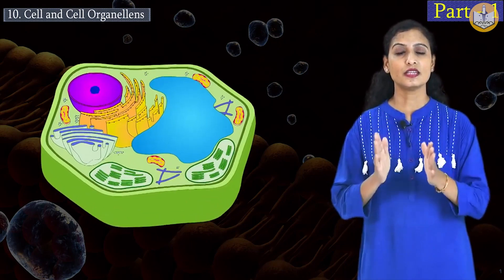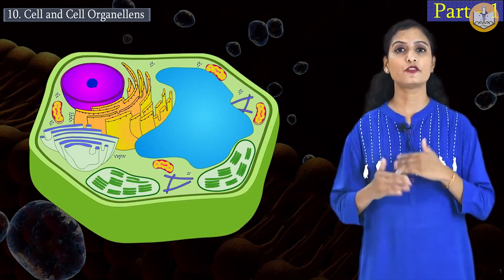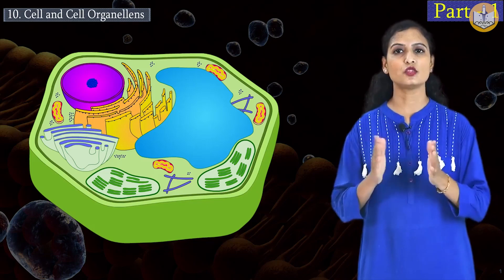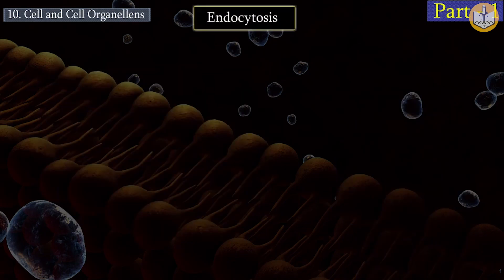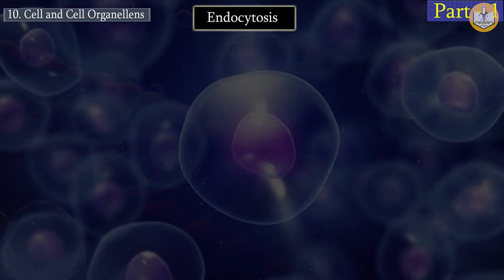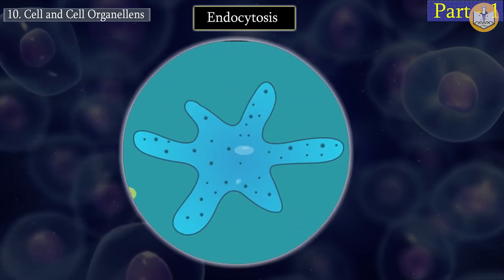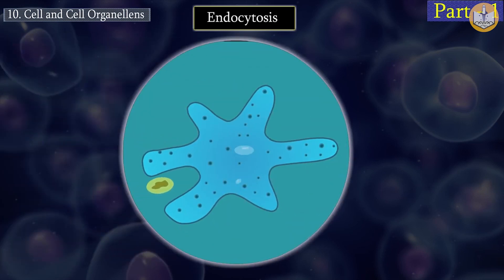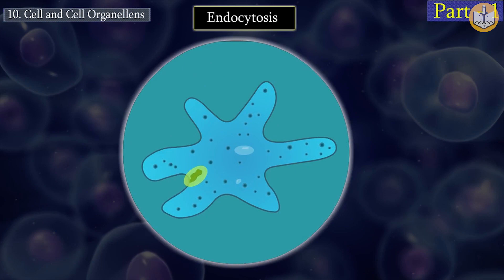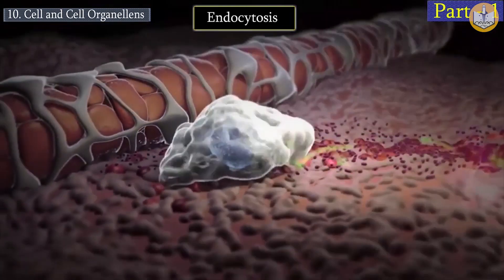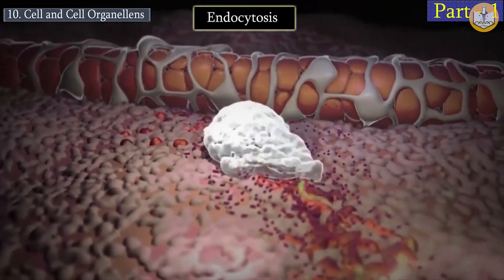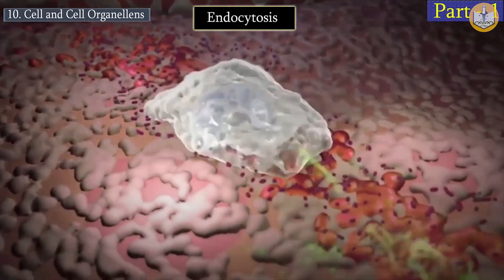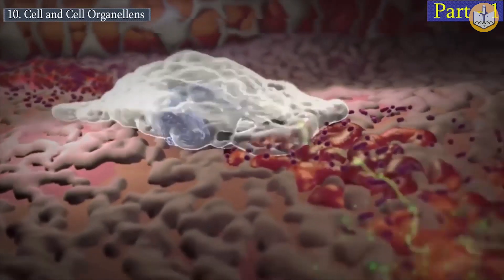Cells use their energy to perform some processes. One of them is endocytosis. In endocytosis, cells engulf food and other substances from the outer environment. Amoeba gulfs substances from the outer environment with the help of pseudopodia. Similarly, cells engulf food and other bacterial substances — this process is known as endocytosis.